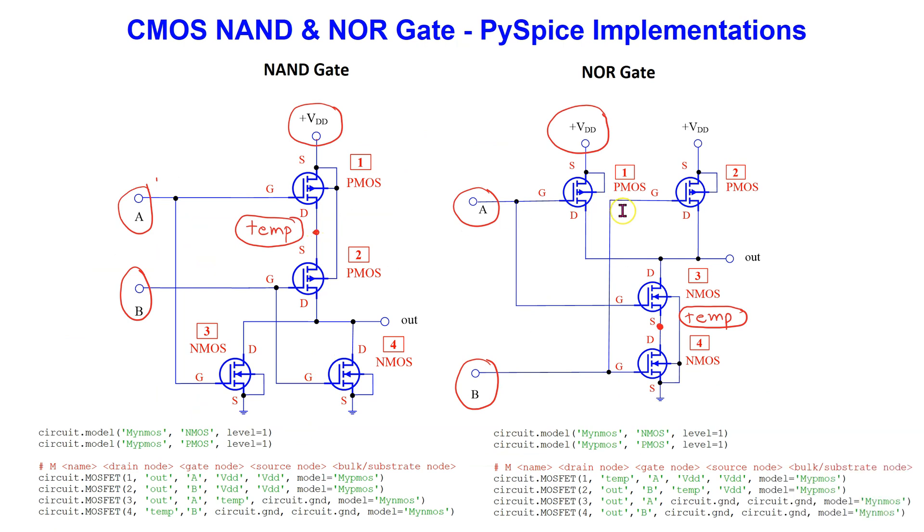The CMOS NAND and NOR gates can be similarly implemented using descriptive node labeling as shown. Please pause the video now if you wish to study this in more detail.